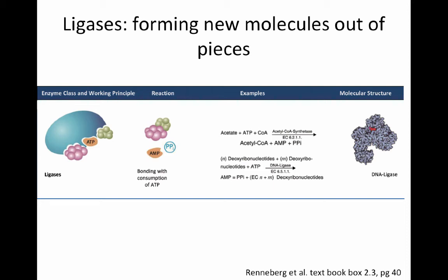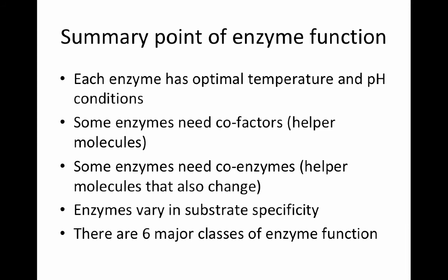The sixth group are ligases, which form two molecules from pieces. ATP is the coenzyme here, because it takes a lot of energy to form new bonds and build new molecules. The example is DNA ligase — similar to DNA polymerases — which polymerizes and adds units to form long DNA molecules. The two pieces to be joined fit into the active sites of the enzyme, ATP is used and converted to AMP with two extra phosphate groups that bridge the two molecules together.